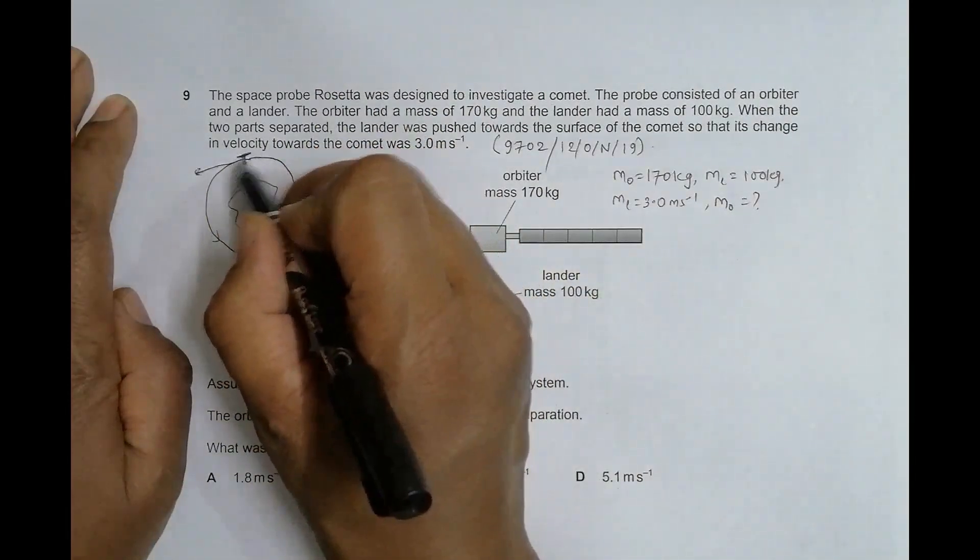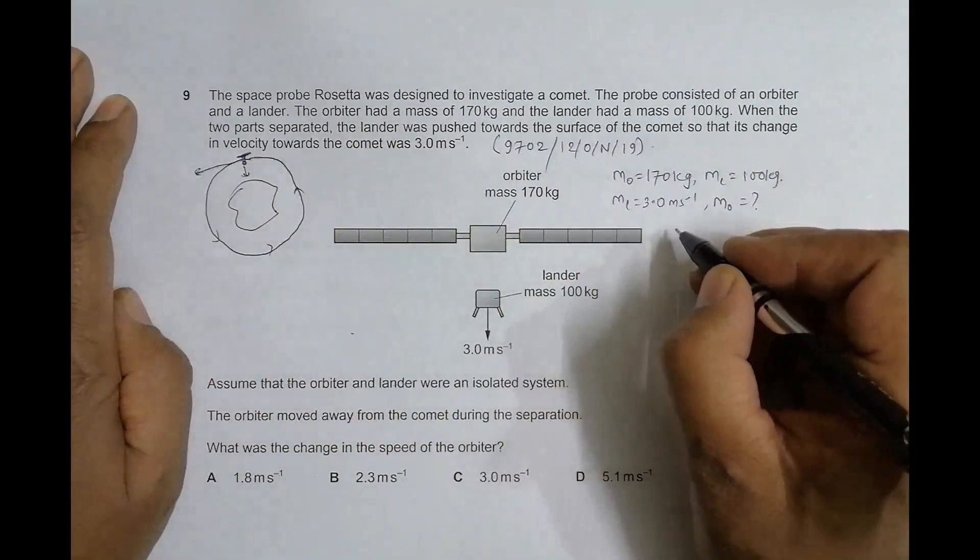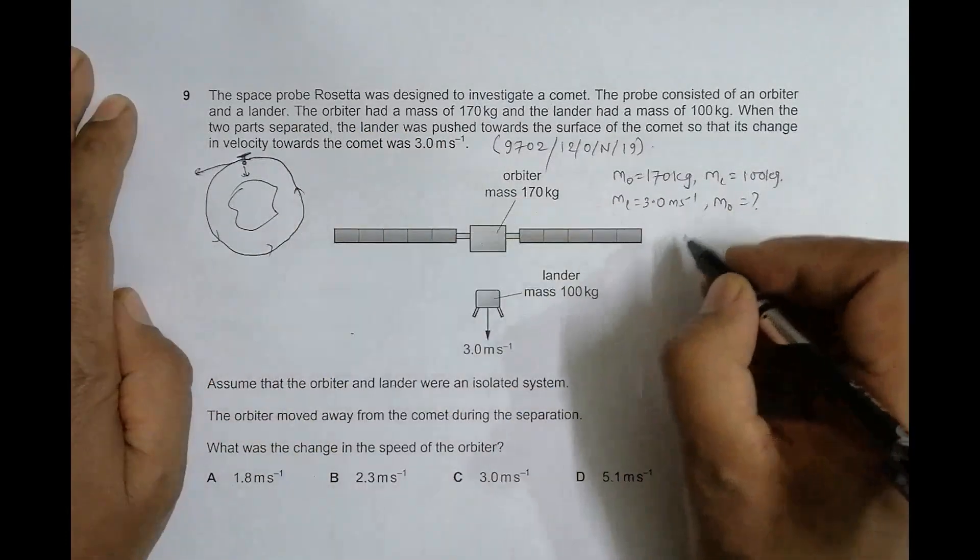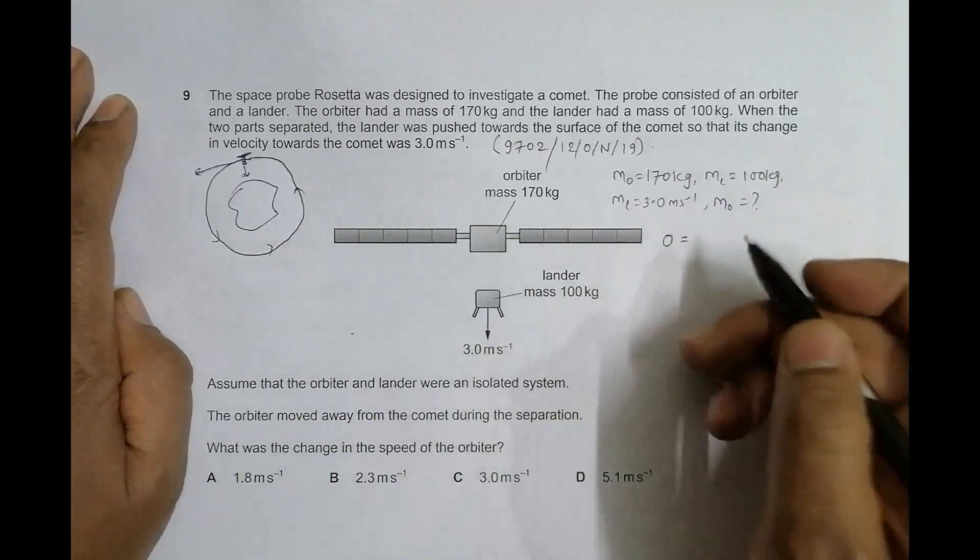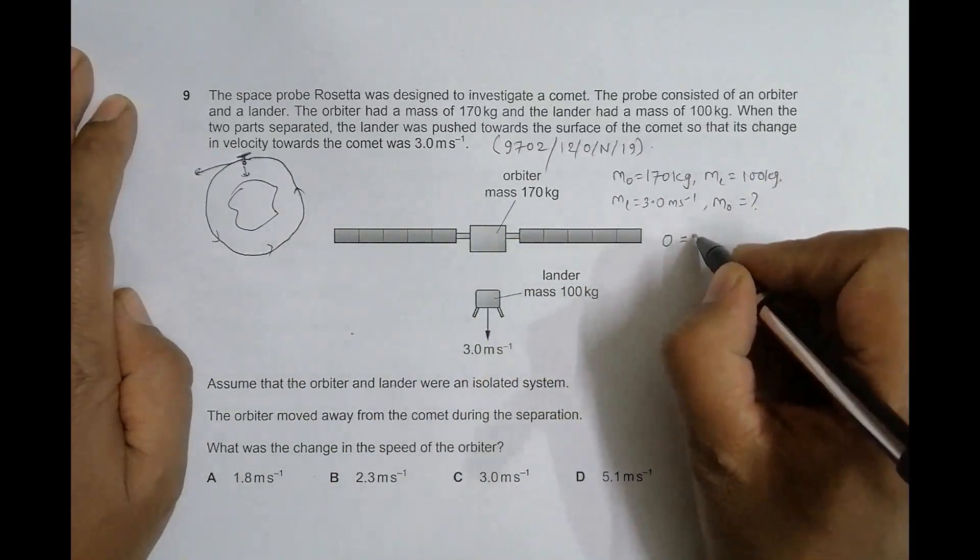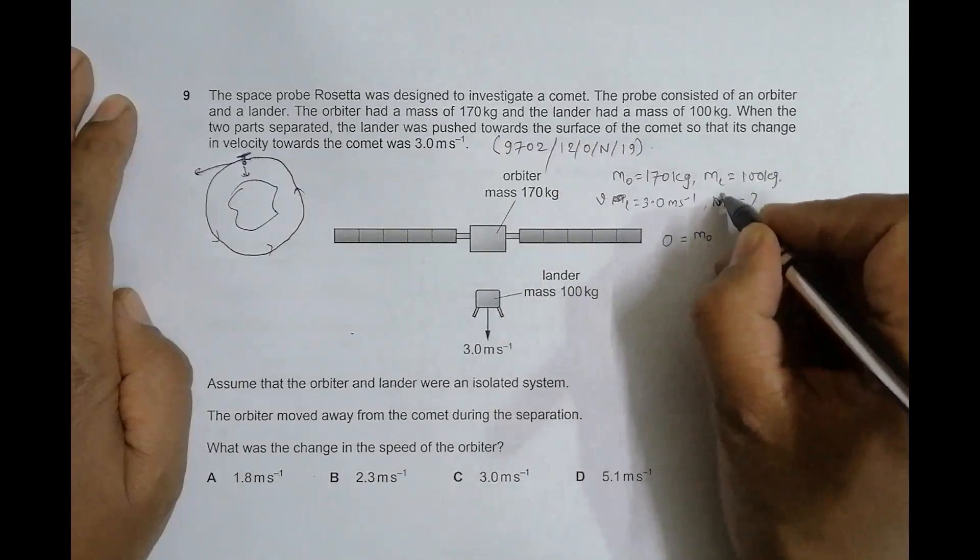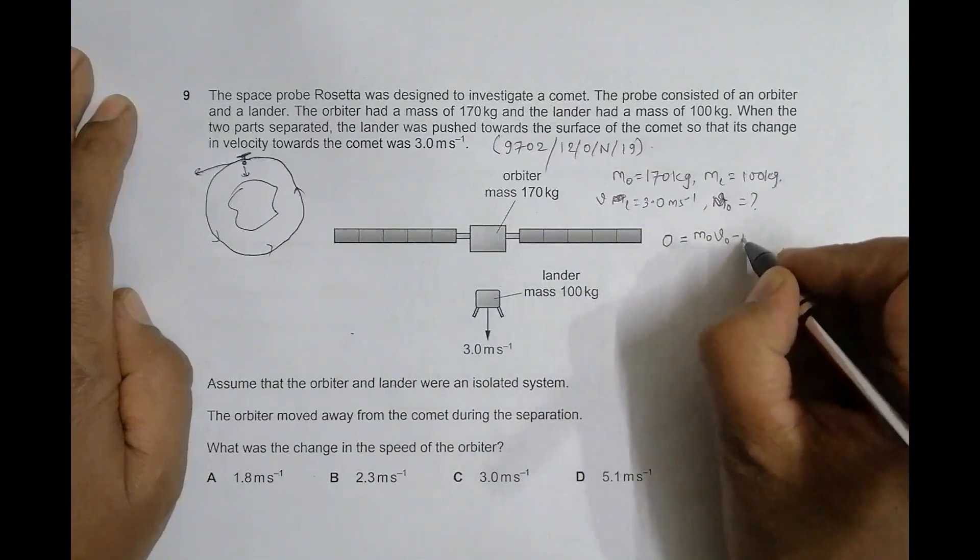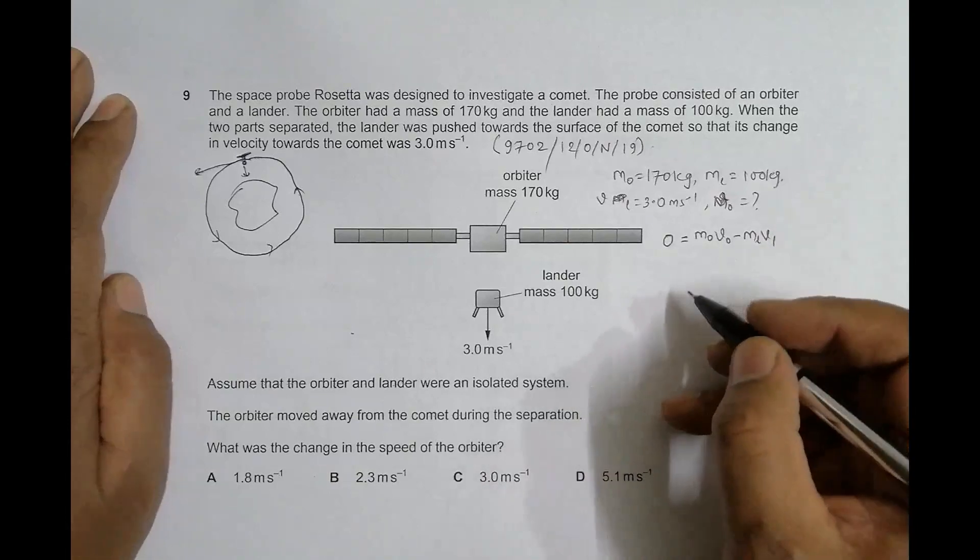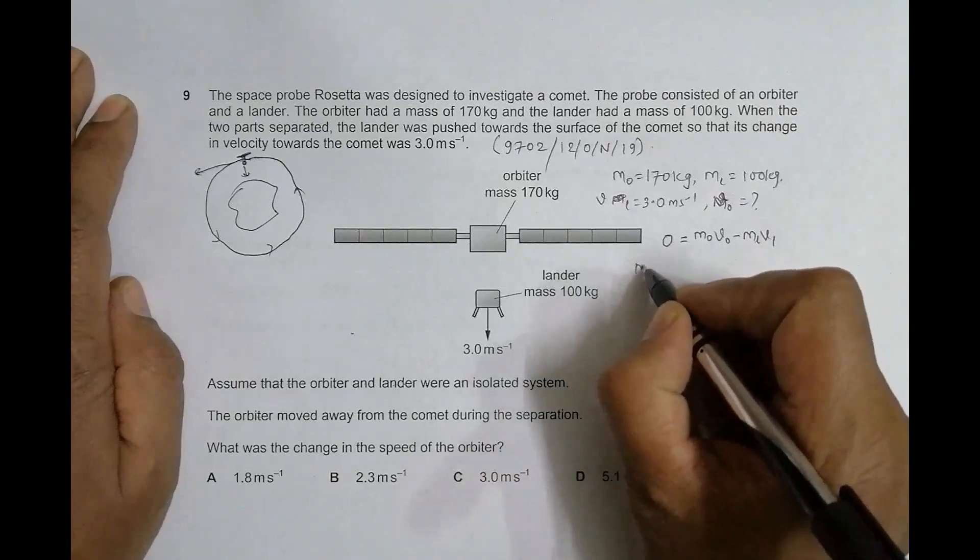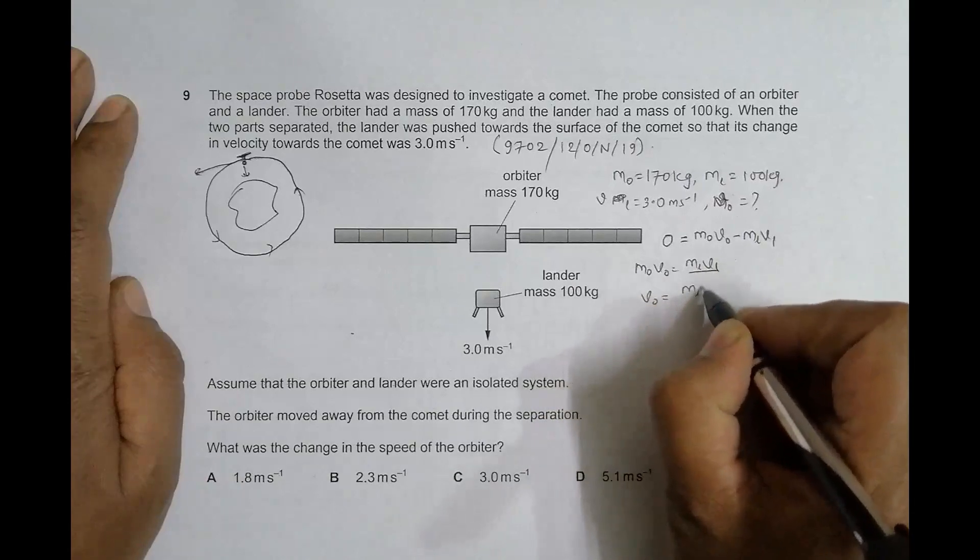Initially it was moving like this, neither towards nor away from the comet. Since they were combined initially, the total momentum is zero. Zero equals M orbiter V orbiter minus M lander V lander, since they move in opposite directions. This gives us M orbiter V orbiter equals M lander V lander, which gives us V orbiter equals M lander V lander divided by M orbiter.